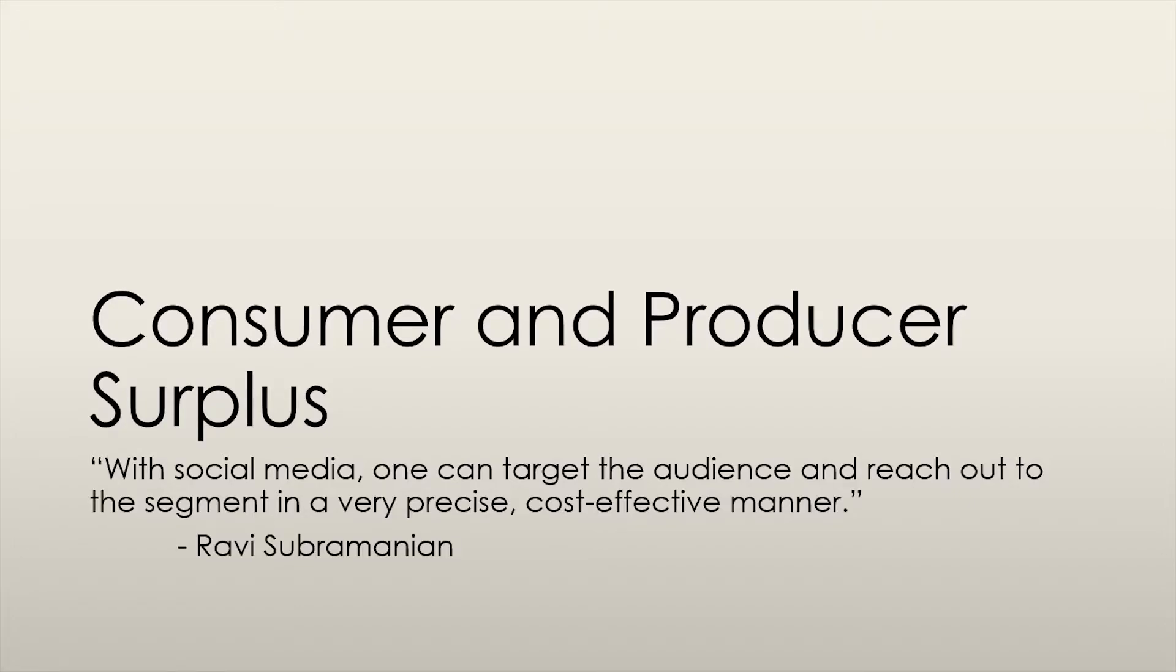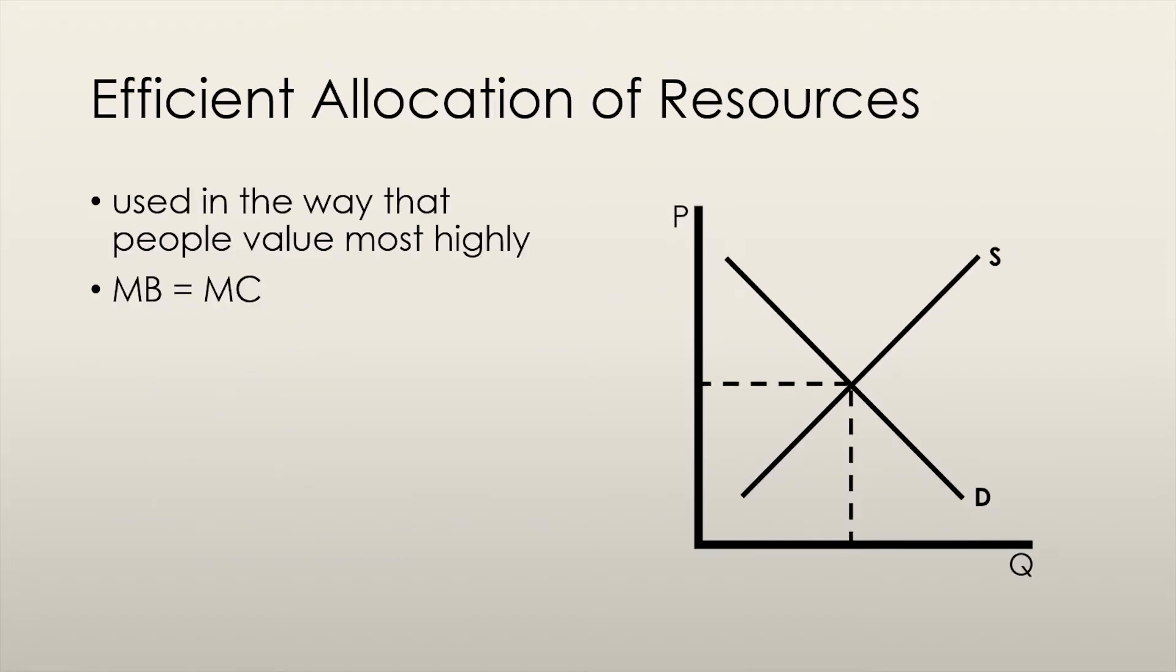Let's introduce the concepts of benefit, cost, and surplus. Resources are allocated efficiently and in the social interest when they are used in the ways that people value the most highly. This is the same as saying that the marginal benefit of consuming an additional unit equals the marginal cost of producing an additional unit, or in simpler terms, where demand equals supply.